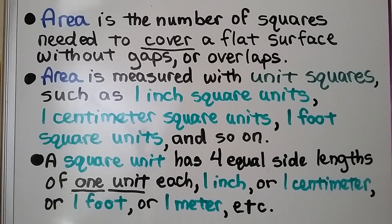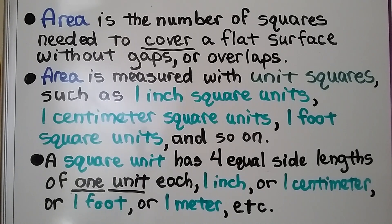Area is the number of squares needed to cover a flat surface without gaps or overlaps. Area is measured with unit squares, such as one inch square units, one centimeter square units, one foot square units, and so on. A square unit has four equal side lengths of one unit each — it could be one inch, one centimeter, one foot, one meter, etc.